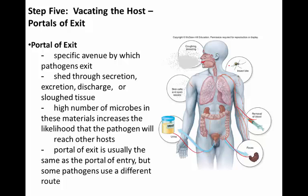Very common portals of exit are often associated with the specific portal of entry. In the GI tract, the fecal-oral route is very common for both entry and exit. Things that are coughed and acquired through coughing or sneezing are very often coughed or sneezed onto other people to help transmit them. Insect bites and other vectors that gain access via the parenteral route will often have organisms shed the same way — another insect comes in and picks them up.